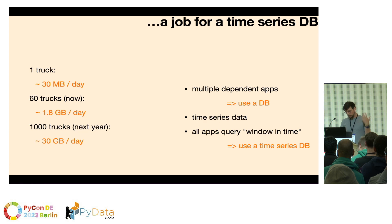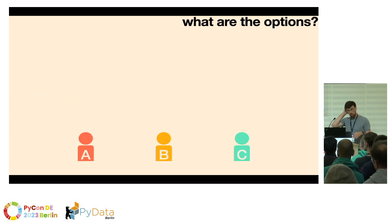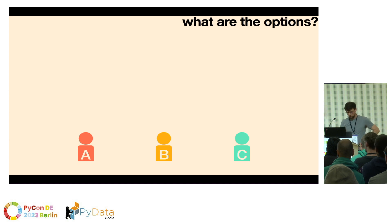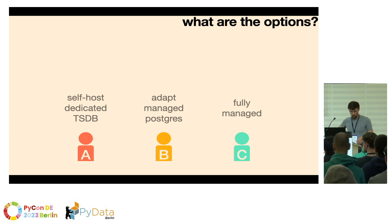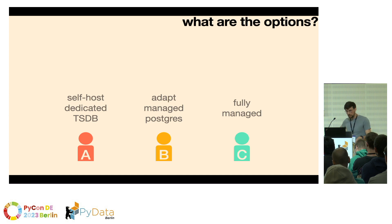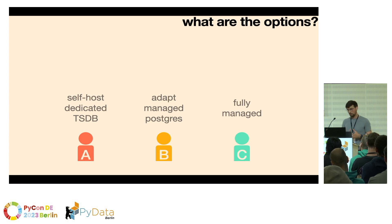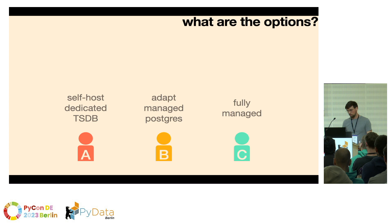When we realized we had this use case, we had three people who wanted to look in parallel into different ways of doing that. Meet Alice, Bob, and Chris — not their real names. Alice looked into self-hosted dedicated time series databases, because there's a lot of technology out there and it's interesting to see if a very specialized product would do this best. Bob wanted to see if we could adapt managed Postgres, because Postgres is what our team uses all the time and everybody knows it. And Chris wanted to see what the fully managed options are, because we hope the business is scaling a lot in the future and the fully managed option would probably be the best one for that.